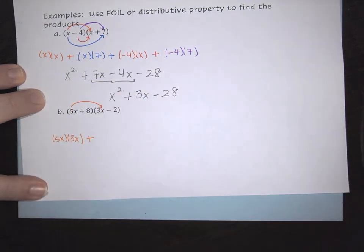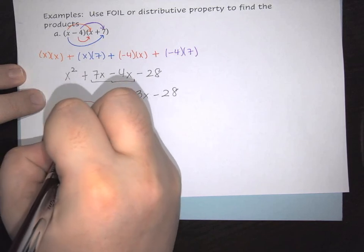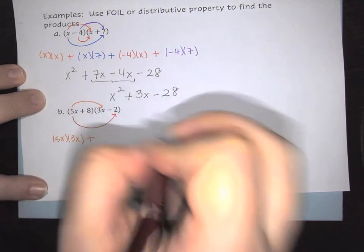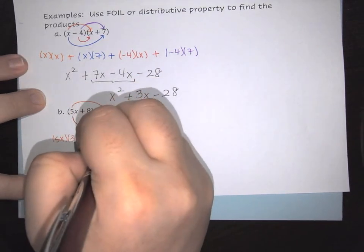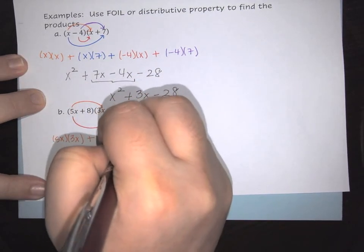Then you're going to add it to your next. We're going to do the outers, the outer two most terms. So in this case, we're now going to have the 5X times the negative 2.